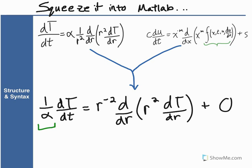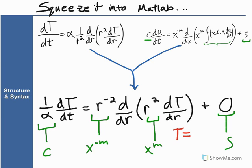So our 1 over alpha, that becomes our c. The r to the negative 2 is the same as x to the negative m. Our r squared is the same as x to the m. Our 0, I put that as a placeholder for s. A really important distinction to make is that t is represented by u, and r will become x. MATLAB will not understand if you put in t or r. However, it will understand if you put in u and x.